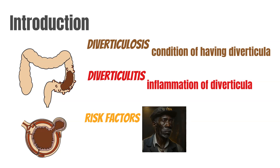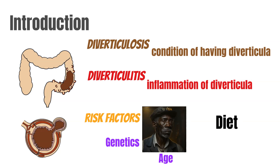Before we get into the good stuff, we have two unavoidable risk factors to mention: genetics and age. As you get older, the walls of your large intestine become weaker, and the pressure of hard stools passing through your intestines can cause diverticula to form. The majority of people will have some diverticula by the time they're 80. They might not get any symptoms, but genetics and age play a huge role — especially if family members had diverticular disease before the age of 50.